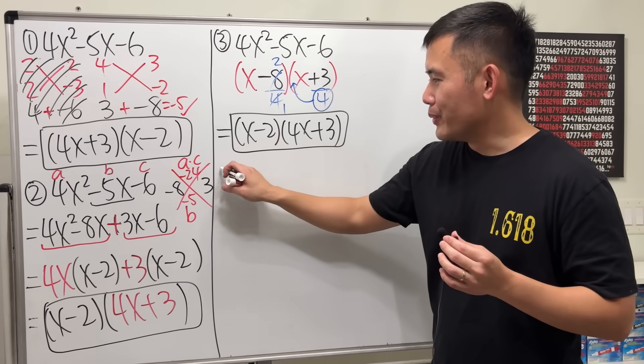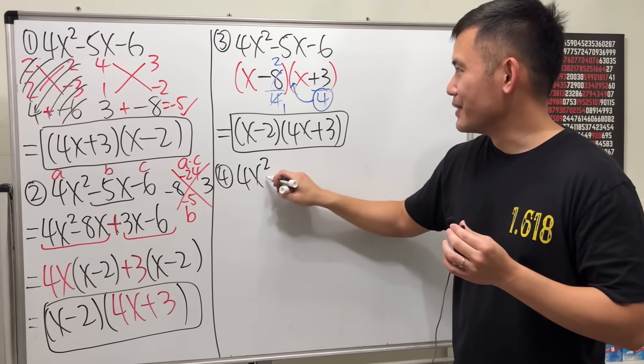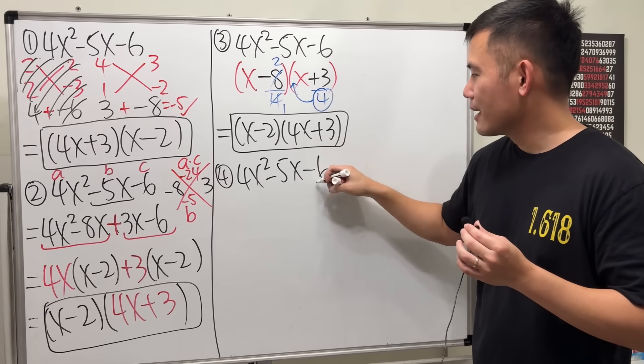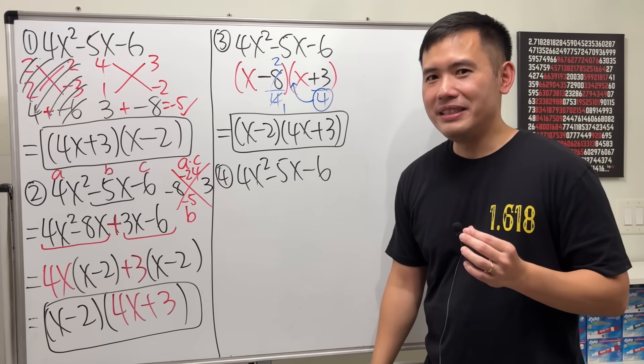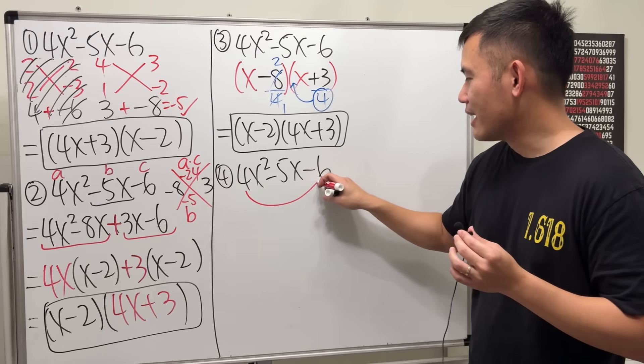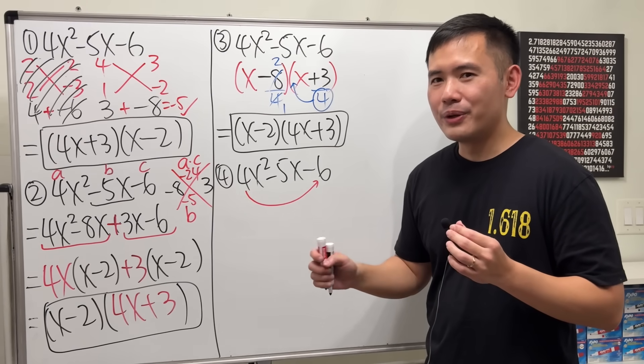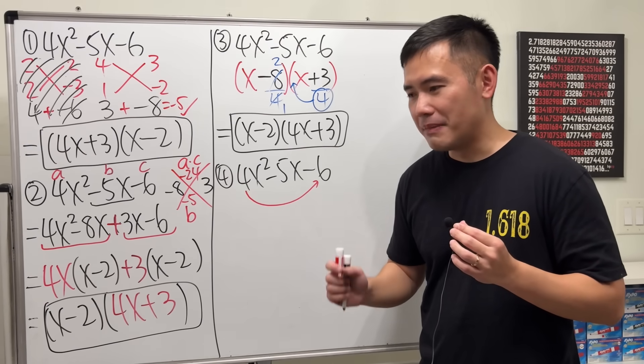The next method I want to show you, it has a similar flavor as this. So, let's have a look. I would like to call this the Amazon way. Because, the first thing that you do is you draw the Amazon arrow. But, I will also tell you, this is also called the slide and divide method.